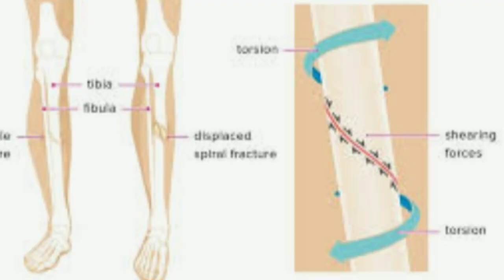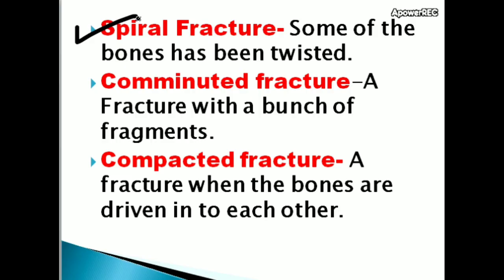Spiral fractures occur when some bones have been distorted due to a rotational twisting force. They usually affect any long bones — for example, the tibia.